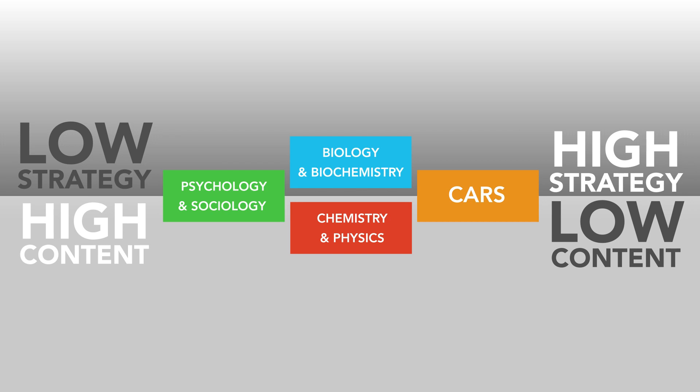In other words, your content knowledge can overpower your strategy deficiency and allow you to score reasonably well despite not having an effective MCAT test-taking strategy. So what does this mean for your CARS score? If your scores on the three content-based sections are consistently higher than your CARS score, then your pre-existing content knowledge is likely helping to keep your science section scores afloat. However, there may still be a larger underlying strategy weakness that's deflating all four of your subsection scores and impacting your CARS score the most.